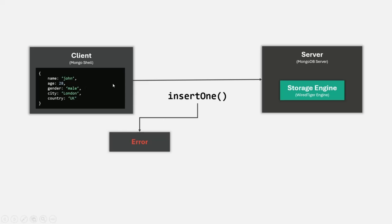For example, let's say when the insert operation was happening, the name and age fields were saved in the database file, and after that something went wrong — maybe the server restarted — so the other three fields were not written. In MongoDB, if something like this happens where a partial document is written, updated, or deleted, MongoDB will make sure that the transaction fails completely and everything rolls back. That means those name and age fields already written to the database file will also be rolled back and deleted from the database file. This is called atomicity.